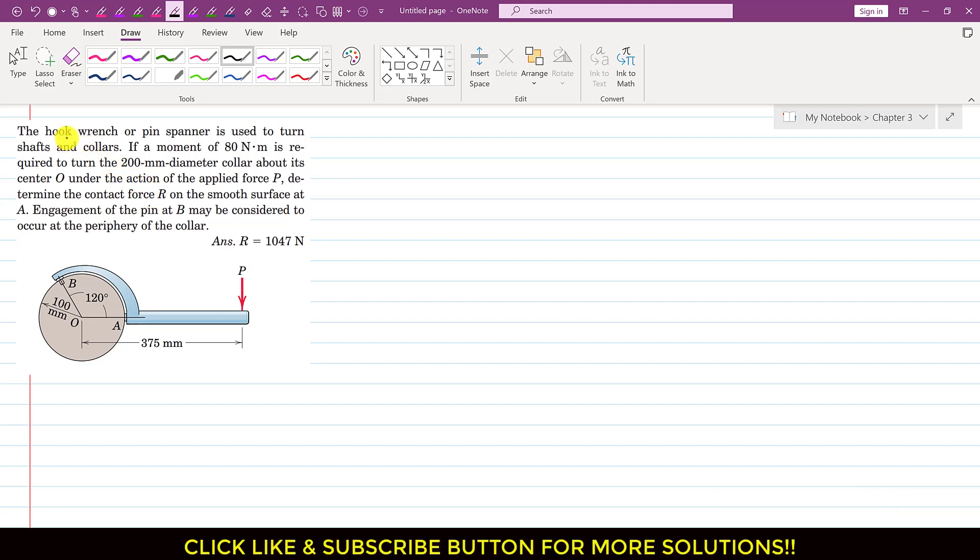In this problem, it is said that the hook wrench or pin spanner is used to turn shafts and collars. If a moment of 80 Newton meter is required to turn this 200mm diameter collar about its center O under the action of the applied force P, determine the contact force R on the smooth surface at A.